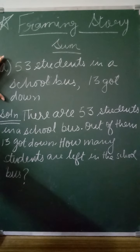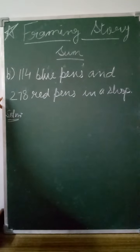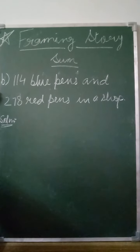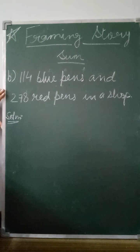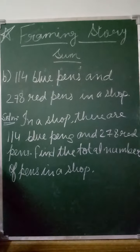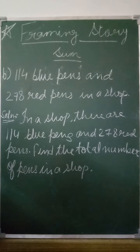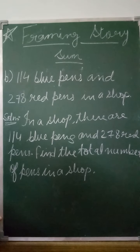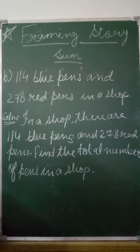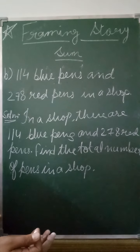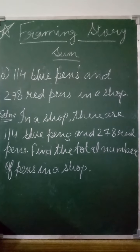In this way, you just have to frame the word problem — no solution needed, only framing. First understand whether the fact is addition or subtraction. Another fact: 114 blue pens and 278 red pens in a shop — this is an addition fact. Framed question: 'In a shop there are 114 blue pens and 278 red pens. Find the total number of pens in the shop.' The story sum can be framed in different ways — that is your choice.